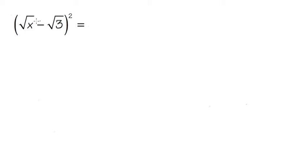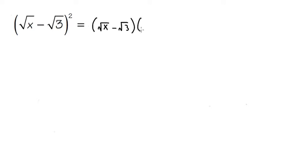This is what we do. This power 2 means we are going to write this down twice, and then we will multiply it out after that. So I'm going to open the parentheses first, and then we have the square root of x minus square root of 3. And then we'll write this down again, so we write it down twice: square root of x minus square root of 3. Same thing twice — that's what the second power means.